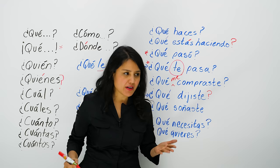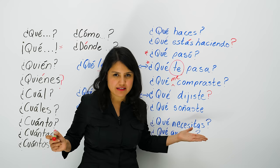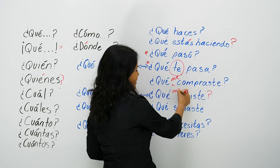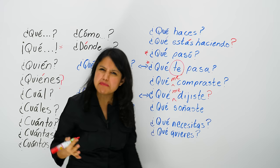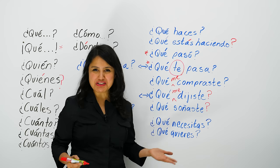'Qué dijiste' — what did you say. You can say 'disculpa, no escuché — qué dijiste,' what did you say, I couldn't hear. You can be more emphatic and say 'qué me dijiste' — like, what did you say to me? Qué me dijiste — oh sí, ya entendí, muy bien.